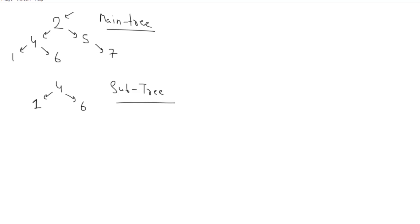Welcome to Coding Simplified. We'll look at a new binary tree problem. We're given two binary trees: one called the main tree and another called the subtree. We need to check whether this given tree is a part of the main tree — a subtree of it. For example, here we have 1, 4, 6, and this part is matching with the given tree, so we can say yes, this is a subtree of the main tree.